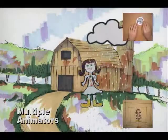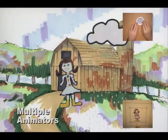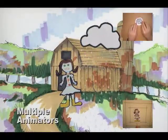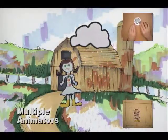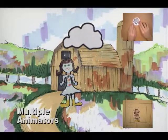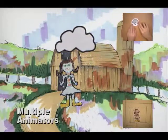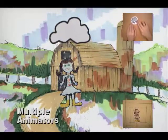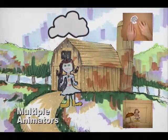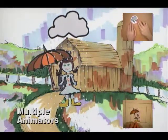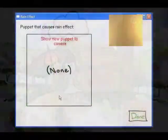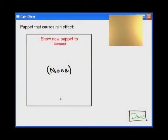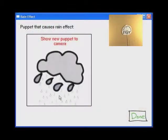This animation was created by merging the simultaneous performances of two remote users. The storm cloud puppet also shows an attached rain effect, which was attached to the storm cloud puppet via another special purpose GUI.